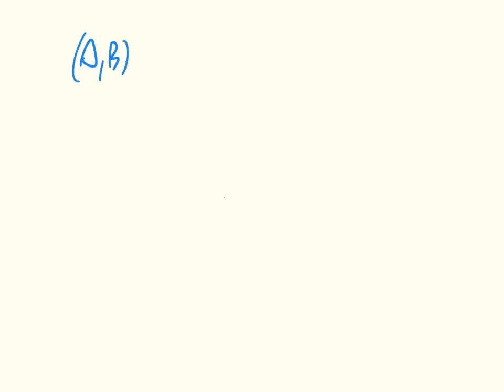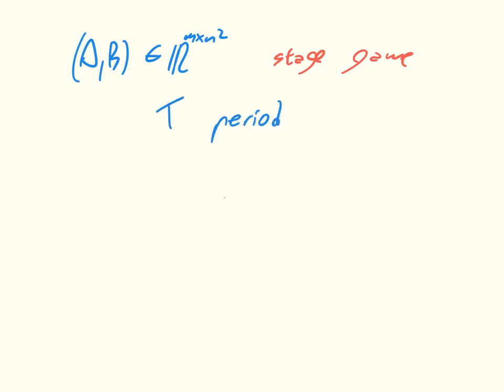Now that we've got a good understanding of computing equilibria for a given game, we're going to look at what's called a repeated game. We start with the usual game defined by A and B — one of the games we've seen so far — but now we're going to call this a stage game. The idea is that this stage game becomes a repeated game when players play it for T periods.